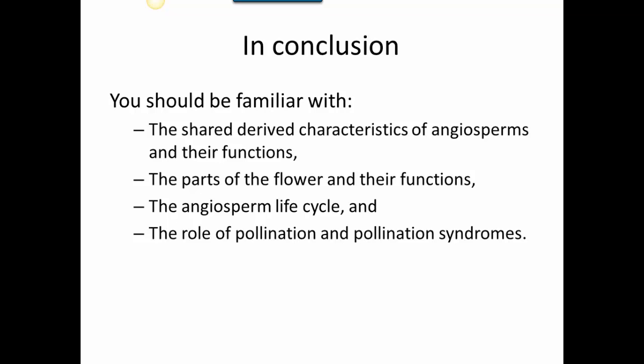In conclusion, you should be familiar with the shared derived characteristics of angiosperms — their flowers and fruits. The flower is extremely useful in aiding sexual reproduction and attracts pollinators that increase the efficiency of that process. Fruits are important in helping to disperse and protect seeds. You should know the parts of the flower — both sterile and fertile whorls and their functions — how the reproductive parts fit into the angiosperm life cycle, and the role of pollination and pollination syndromes.